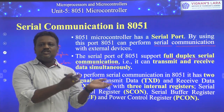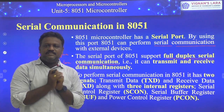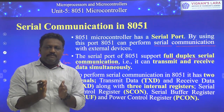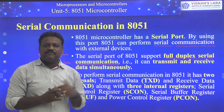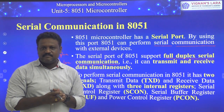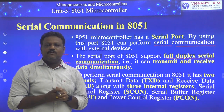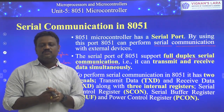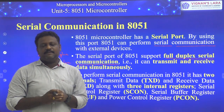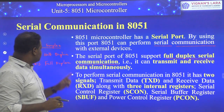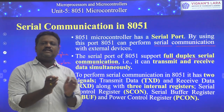In simplex serial communication, communication is possible in only one direction — the other direction is not possible. For example, a CPU always transfers data to an output device; there is no chance of getting data from the output device back to the CPU. Similarly, an input device transfers data to the CPU but the CPU can't send information back to the input device.